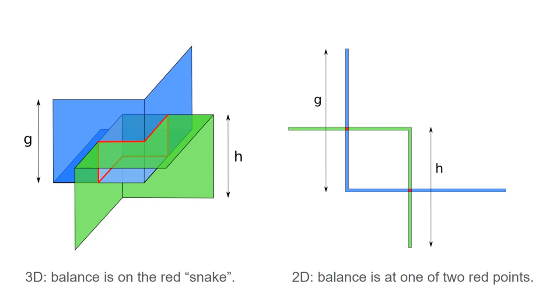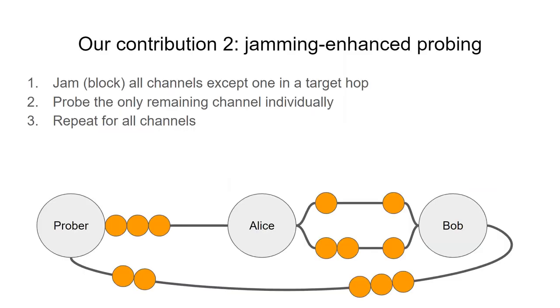This is the challenge in probing multidimensional hops with three channels or more. And this is where our second contribution comes in. We suggest solving this problem for the attacker by using jamming and combining jamming with probing.